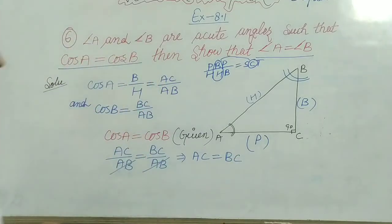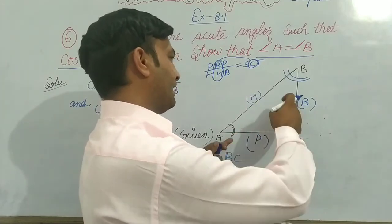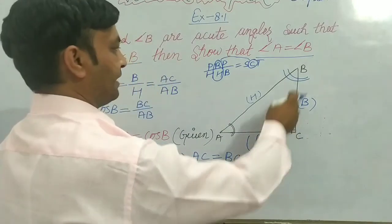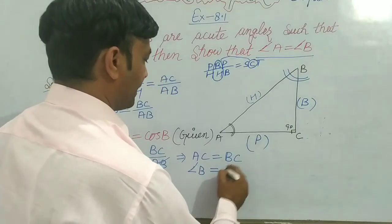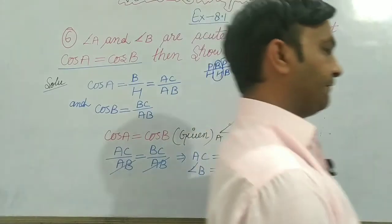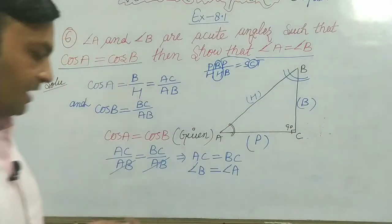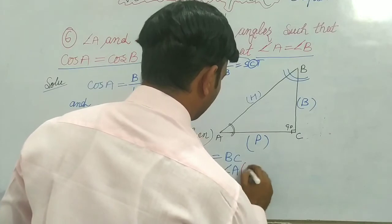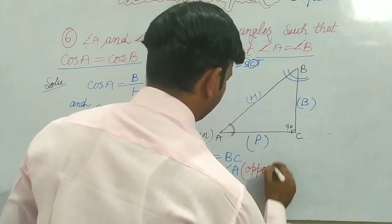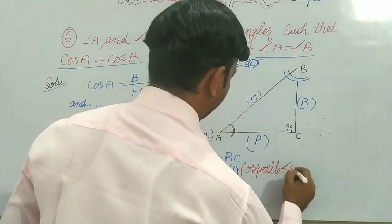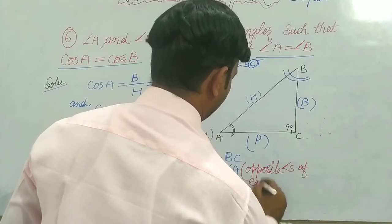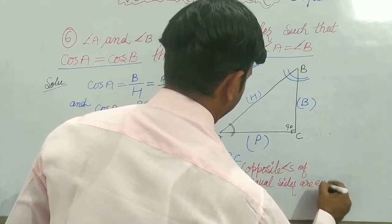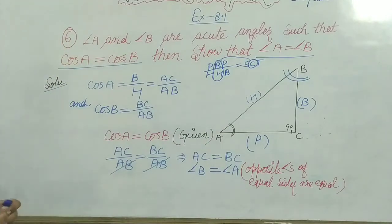Now, in the triangle, the side AC is opposite to angle B, and the side BC is opposite to angle A. We know from a Class 9 theorem that if opposite sides are equal, then the opposite angles must be equal. Therefore, angle A equals angle B — proved.